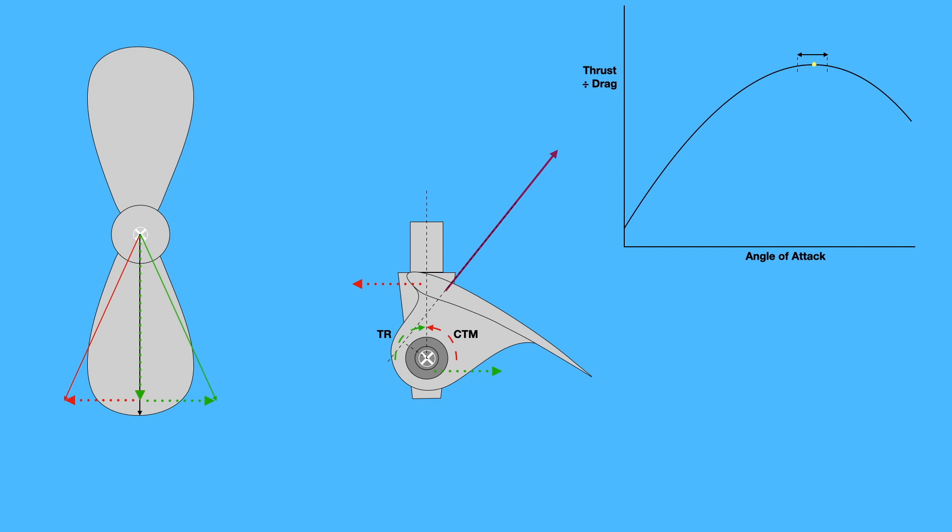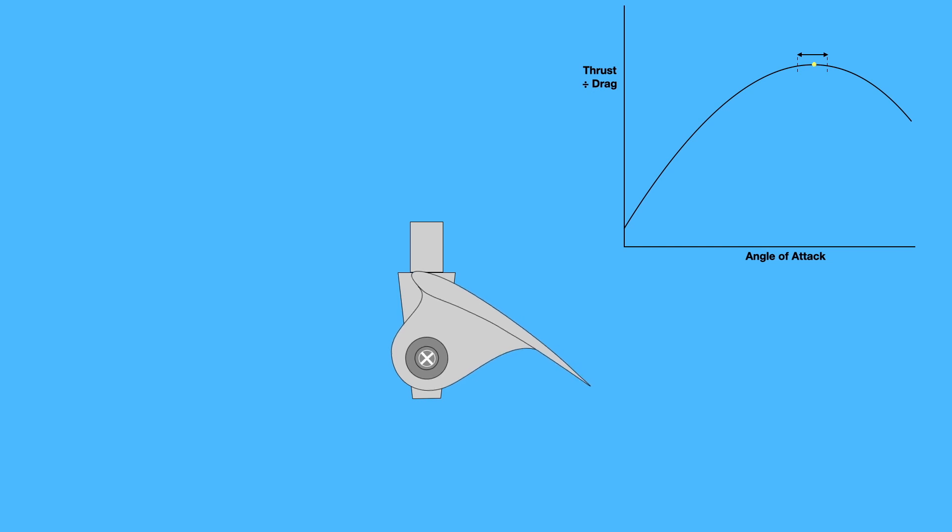So if you're motor sailing and the speed increases, rather than the angle of attack reducing, the blade pitch will change to keep the angle of attack correct. You keep your efficiency and you make more progress for your fuel.